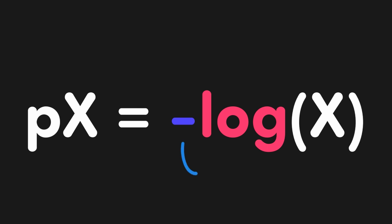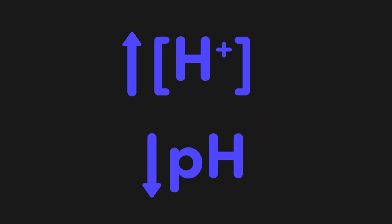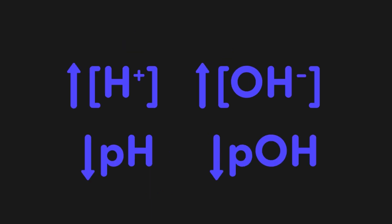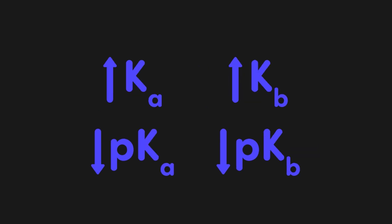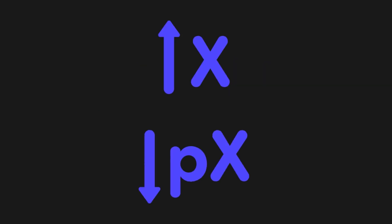In this instance, and in general, a negative sign in an equation indicates an inverse relationship between two values — in this case between x and px. This is why as the H+ concentration increases, the pH of a solution drops. Since we calculate all of the different p-values in the same way, we can extend the same relationship to pOH, pKa, and pKb as well. So in general, the lower the p-scale value, the higher the value it measures, and vice versa.